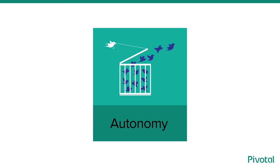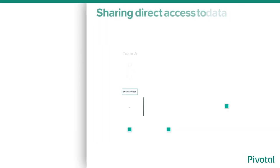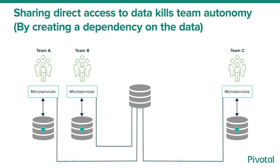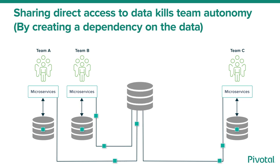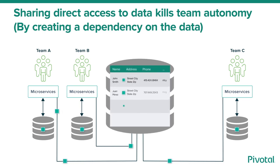So what does the notion of autonomy mean when we apply it to the data layer? A common practice is sharing direct access to data — each team and microservice has their own database, but they also share direct access to a shared database. This is a form of dependency that limits team autonomy. In this example, the teams are updating the name field in the shared database, where both first name and last name are contained in the same name field.